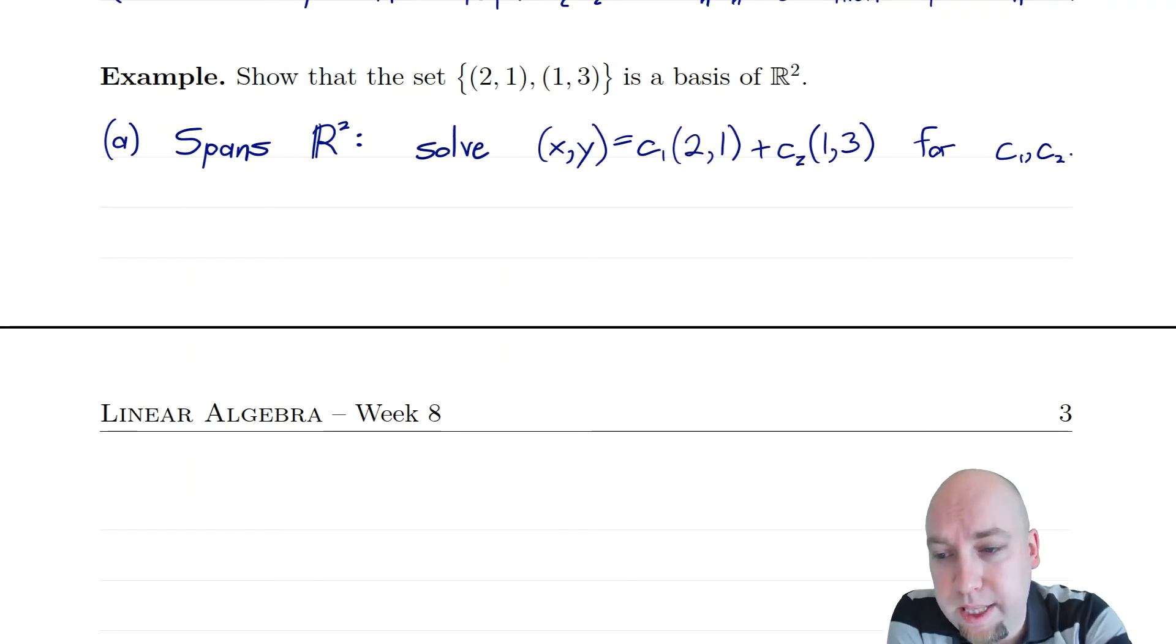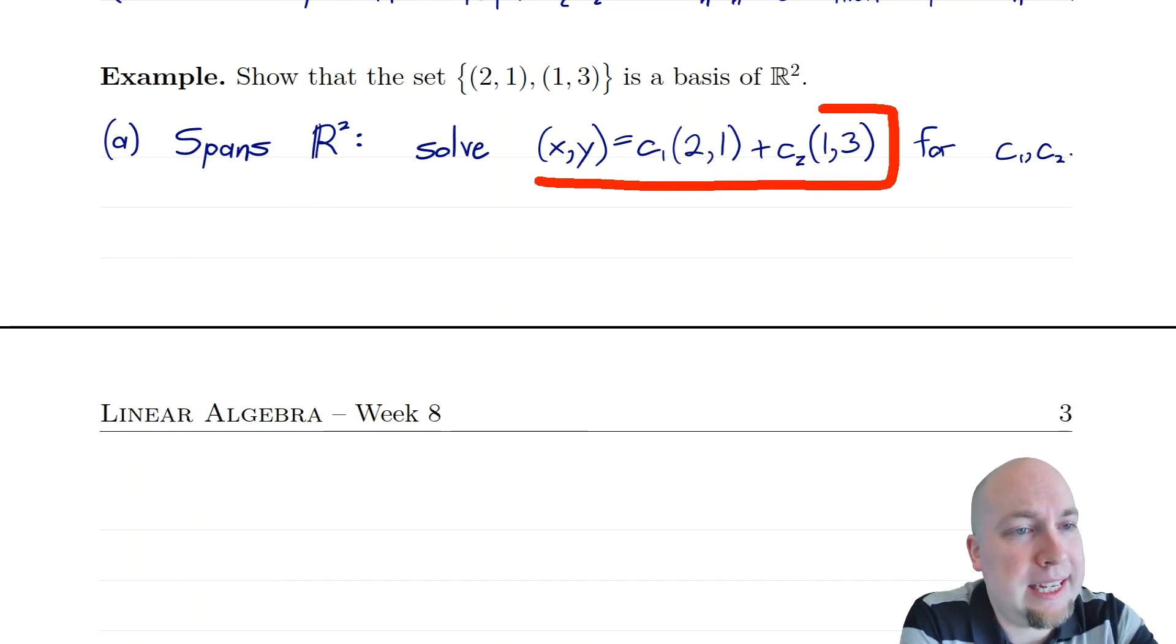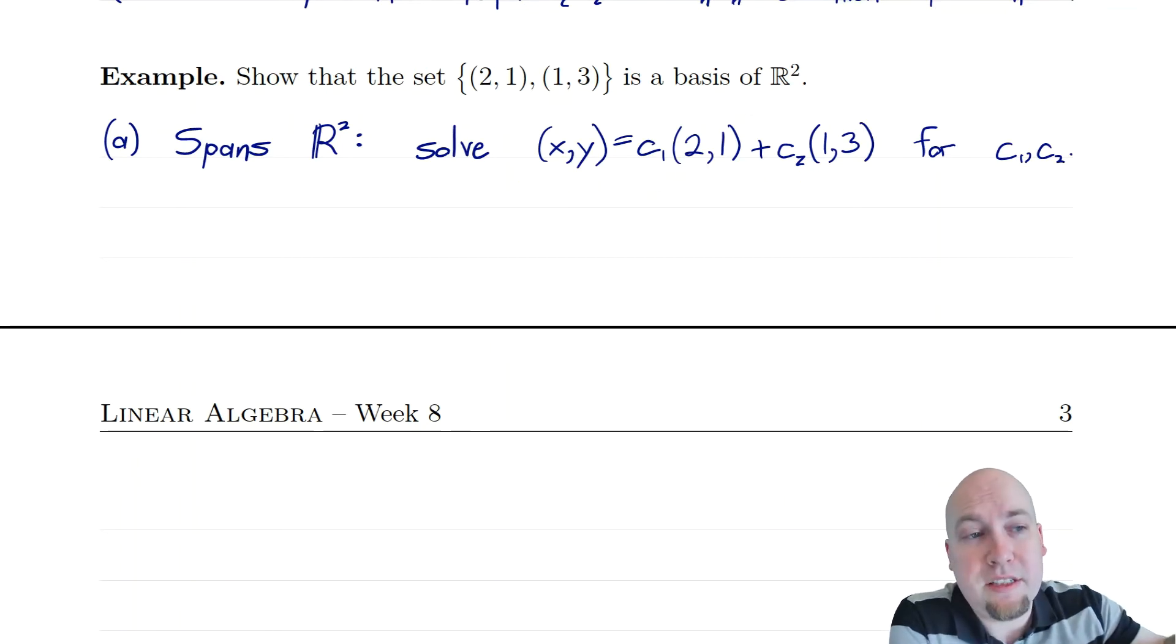Setup's the same though. We've got to show two things. We've got to show that it spans all of R^2, and we've got to show that it's linearly independent. So let's start off with the fact that it spans all of R^2. So the way you do that, we did something like this last week, the way you do this is you pick an arbitrary vector in R^2. I'm just going to call it (x,y). And my goal is to show that I can write that as a linear combination of these two vectors, of (2,1) and (1,3). My goal is to show that for any (x,y), I can find c1 and c2 that make this happen.